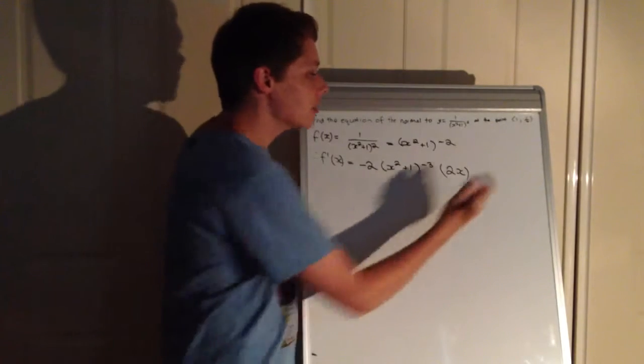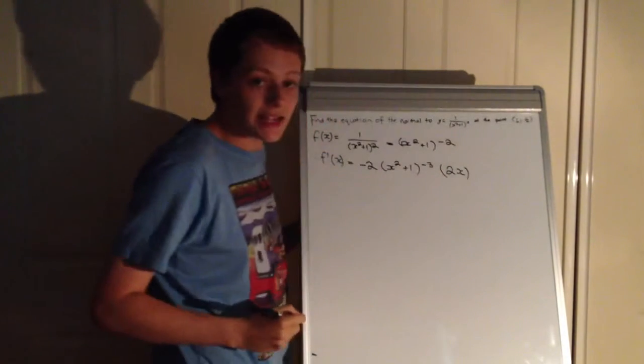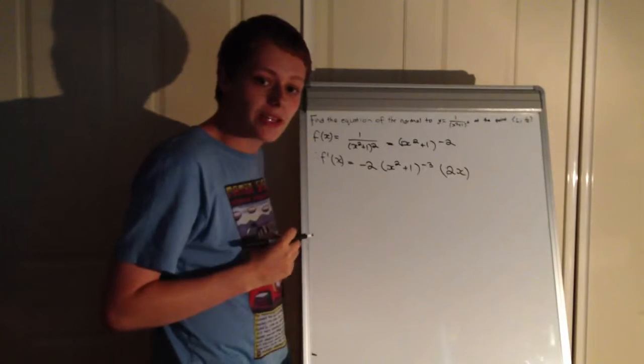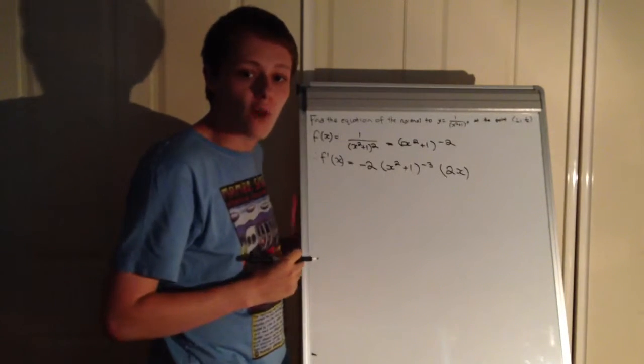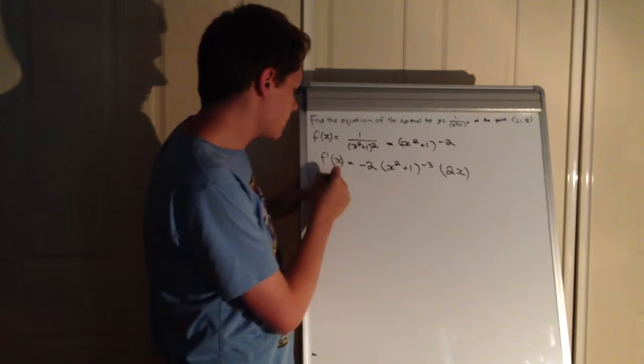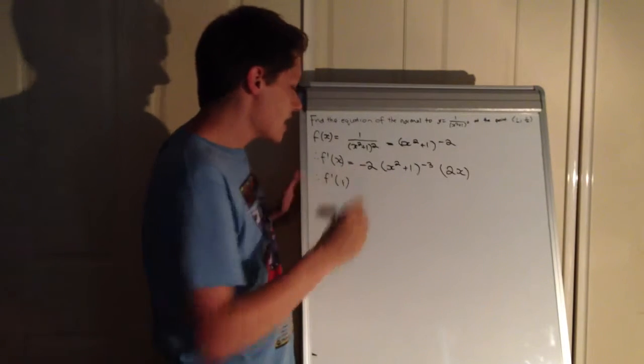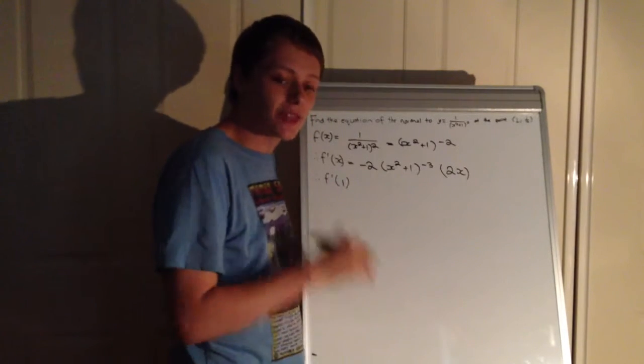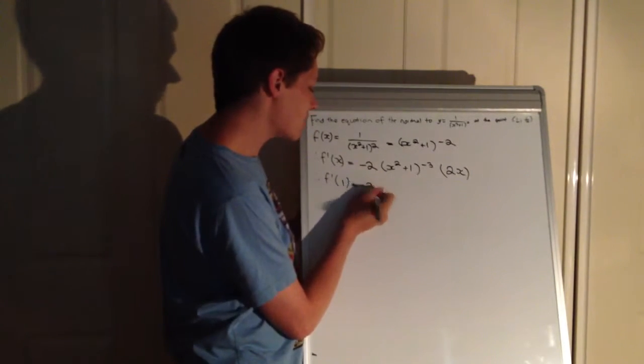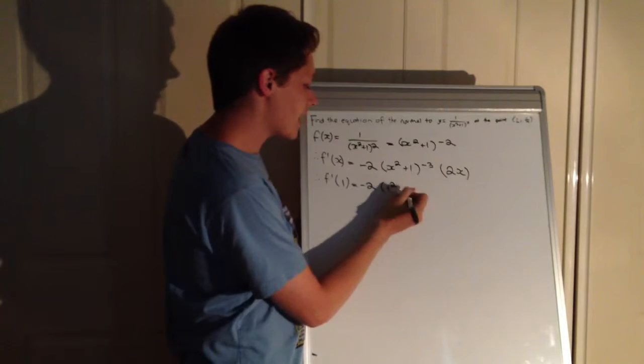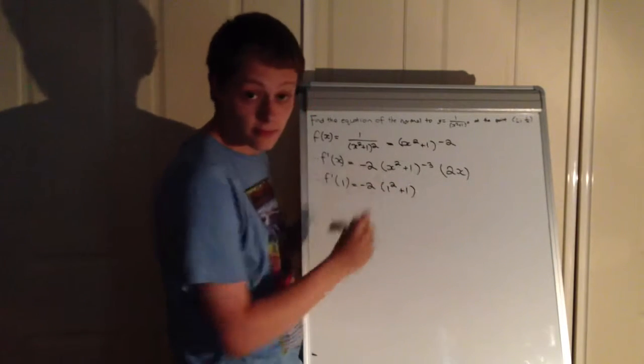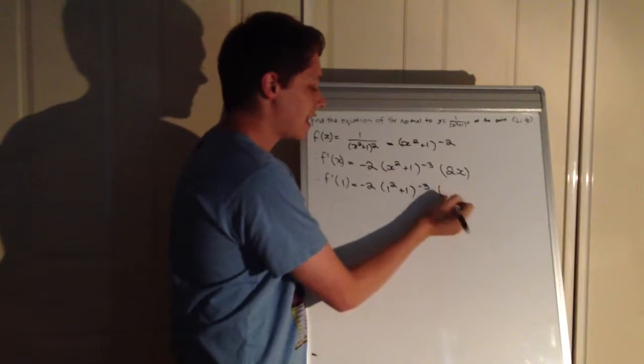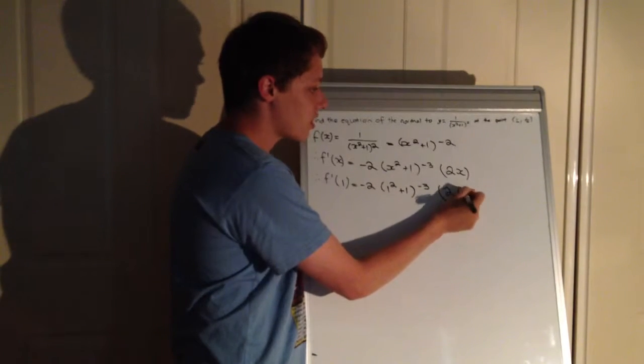Now what? We're given a point, and at this point x is equal to 1. So we need to find the derivative at this point, the f'(1). Therefore, our f'(1), and what we do is wherever there's an x in the equation, we simply substitute in 1. So equals -2(1² + 1)^(-3) and then 2(1).